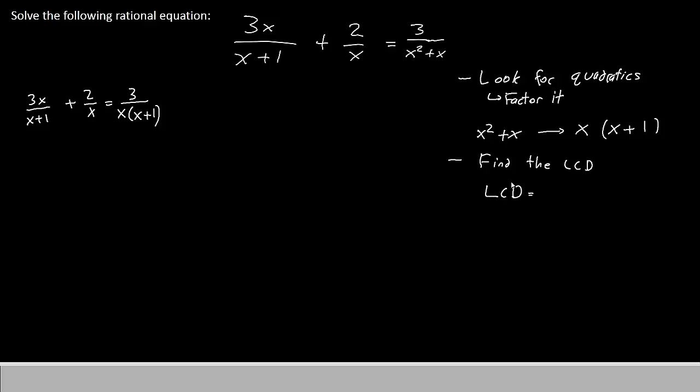To get the LCD, let's look at what terms we have in the denominators. And we definitely have x plus 1. That's got to be part of the LCD. We also have x as well. We'll have to put that there as well. In the third term, we have both x and x plus 1, which are both already in the LCD. So that our LCD is x times x plus 1.